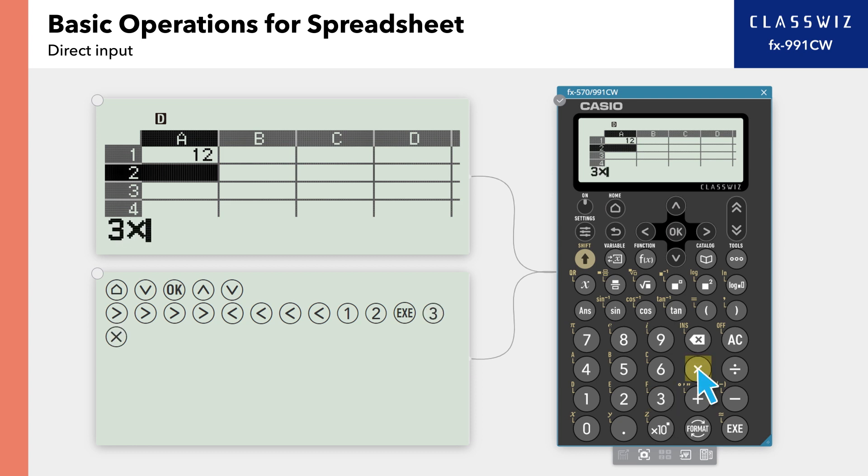In cell A2, enter the equation 3 times 4 plus 5. Entering an equation will show its result in the cell. In cell A3, enter minus 6.